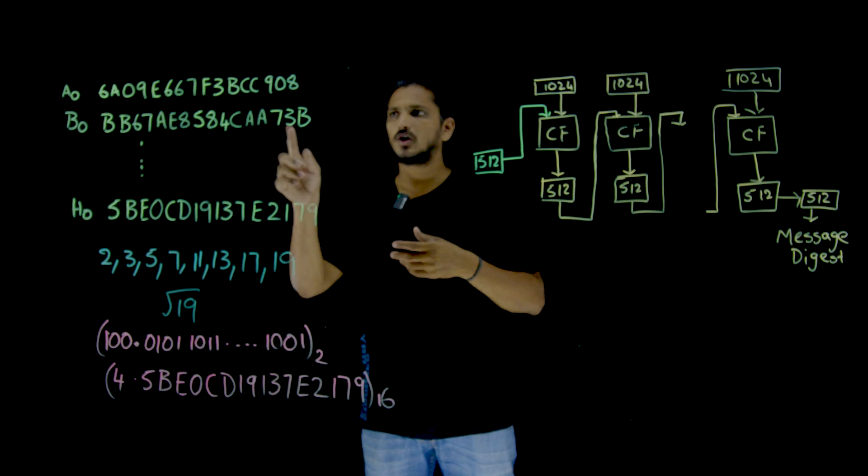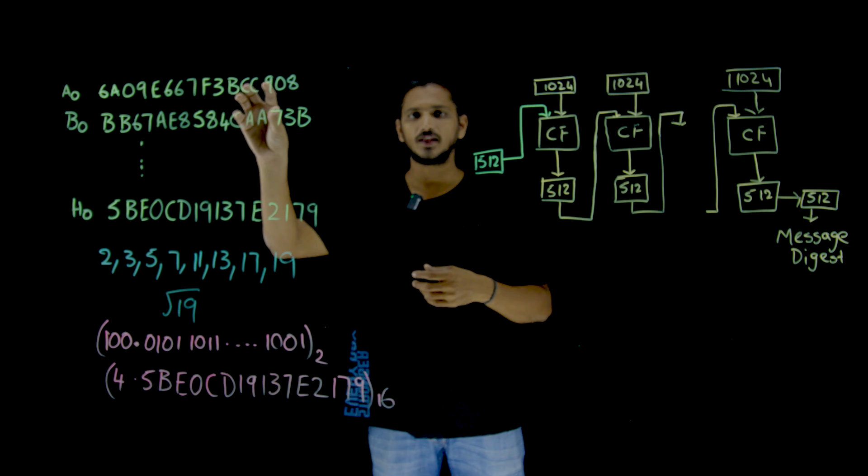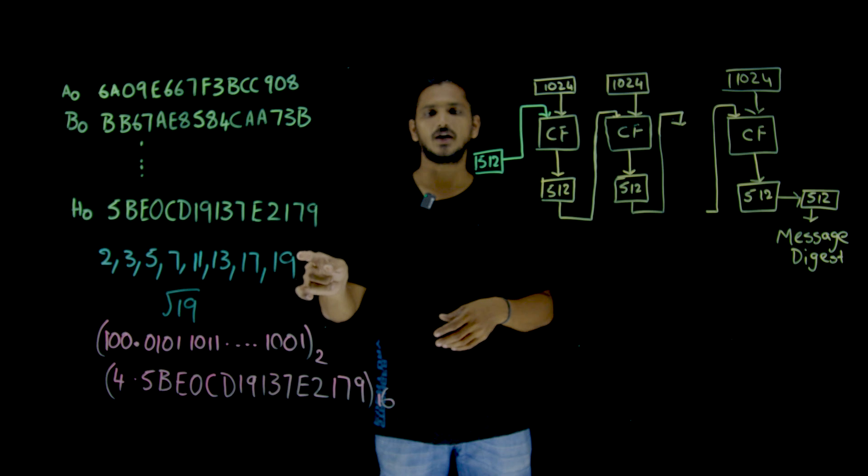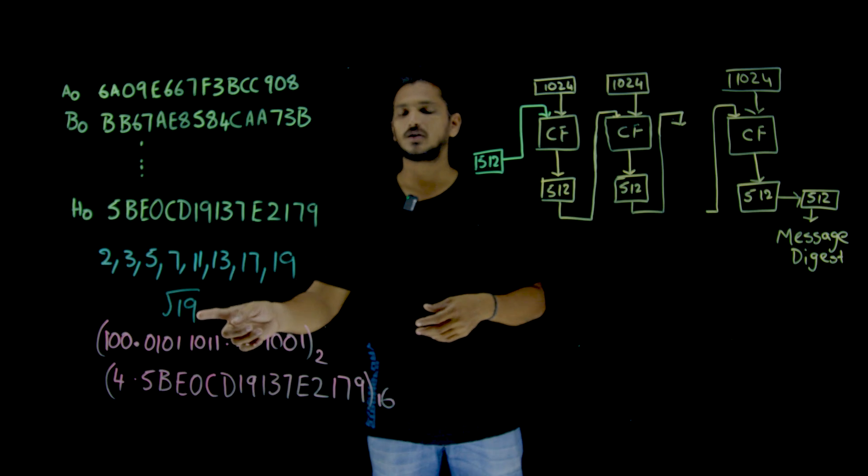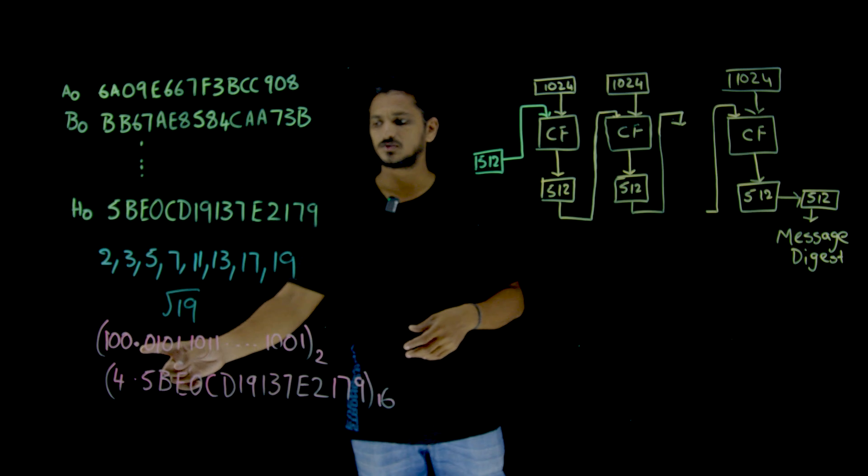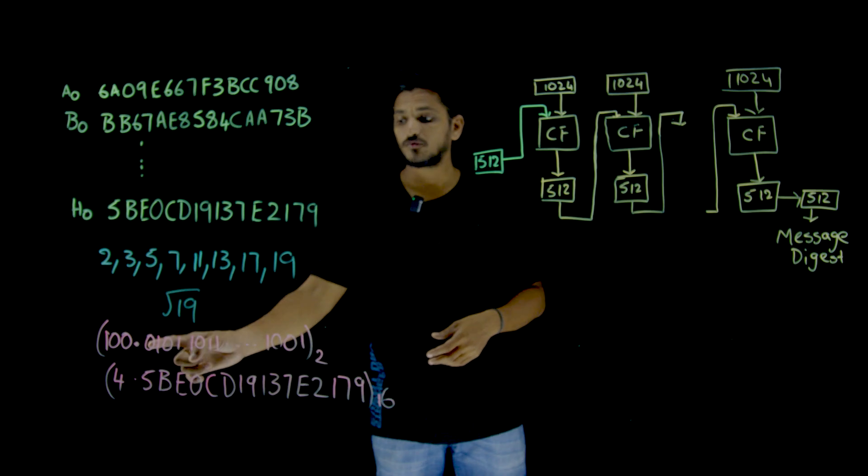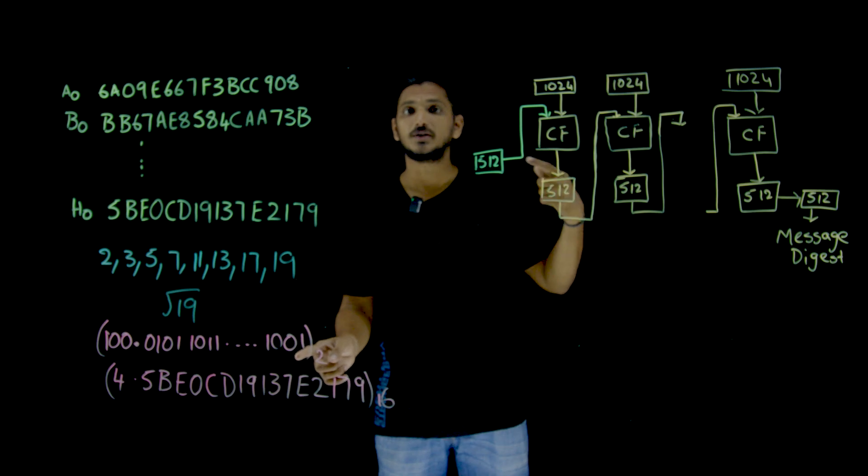So how we got these constants? That we need to understand. In order to get these constants, they generated the first 8 prime numbers: 2, 3, 5, 7, 11, 13, 17, and 19. So take the square root of that prime number. Assume that square root of 19 can be written as 100 dot, after decimal, 0, 1, 0, 1, 1, 0, 1, 1, so on. After decimal you expand up to 64 bits.